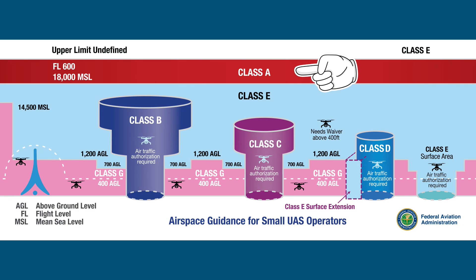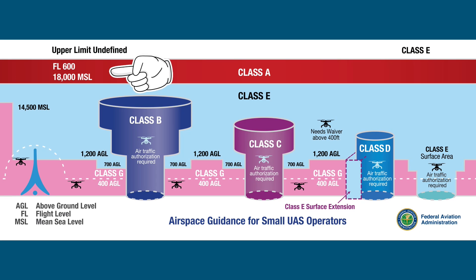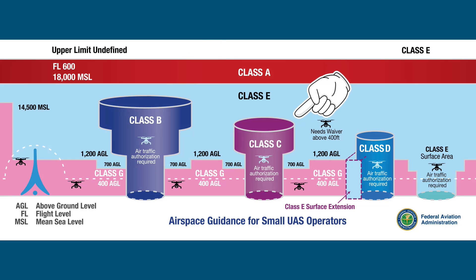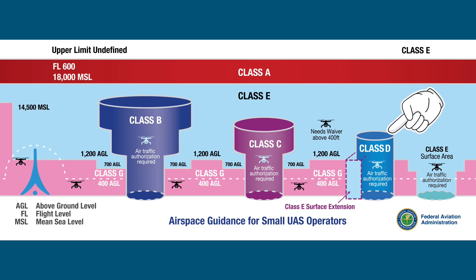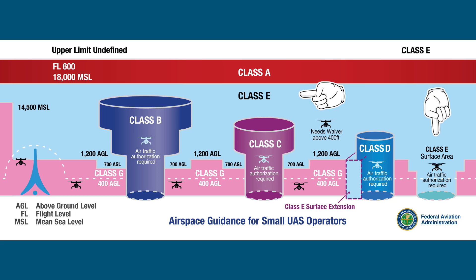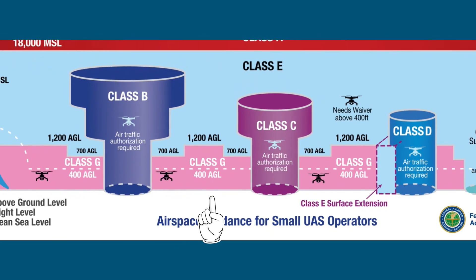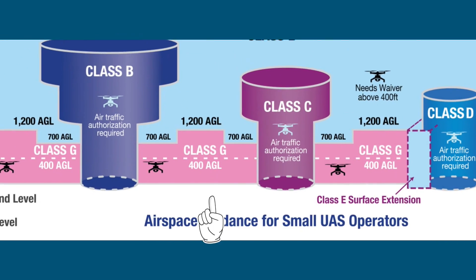Class A is all surface over the United States that begins at 18,000 feet up to 60,000 feet MSL. Class B is the airspace above major airports. Class C is the airspace over large airports that aren't as busy. Class D is for smaller airports that have a control tower. And then there's Class E, which is the airspace between Classes A, B, C, and D and for some small airports. Class G airspace is basically everything else, and that's where drones typically fly.